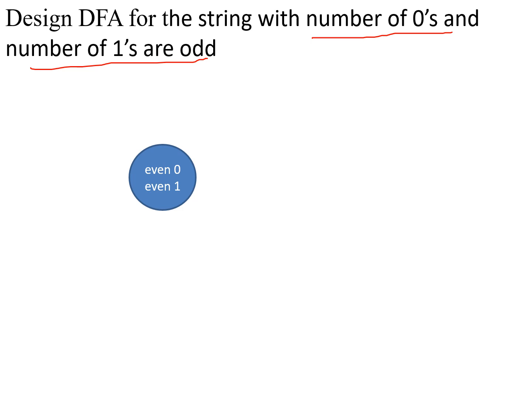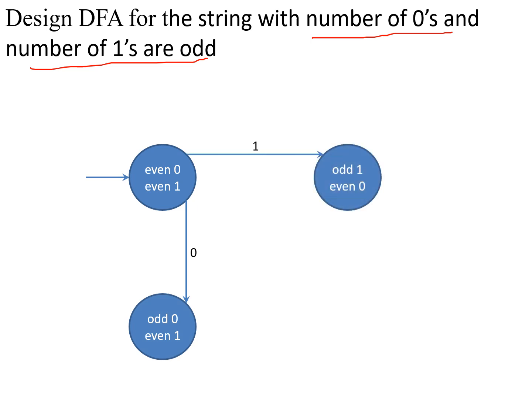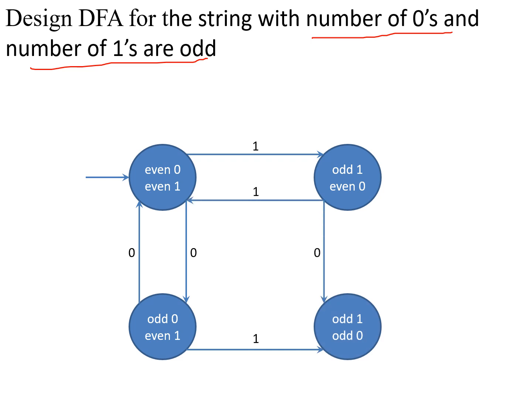This will be the final state. I'll show all of the transitions and then explain. So now, given any string, the problem statement is: odd number of zeros and odd number of ones.